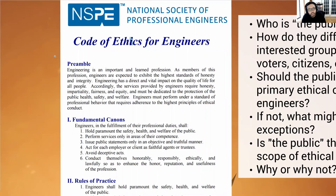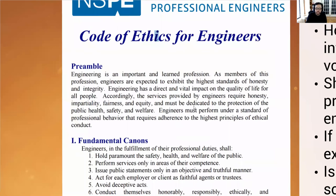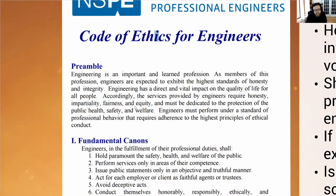The preamble: 'Engineering is an important and learned profession. As members of this profession, engineers are expected to exhibit the highest standards of honesty and integrity. Engineering has a direct and vital impact on the quality of life for all people. Accordingly, the services provided by engineers require honesty, impartiality, fairness, and equity, and must be dedicated to the protection of the public health, safety, and welfare. Engineers must perform to a standard of professional behavior that requires adherence to the highest principles of ethical conduct.' So the preamble motivates why we have this code: engineers have a huge impact on quality of life, so they must be held to the highest standards.